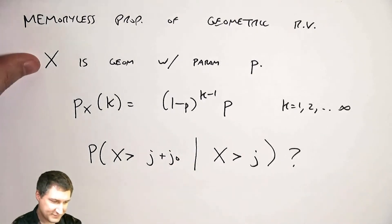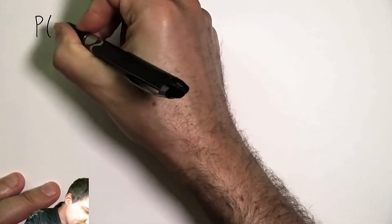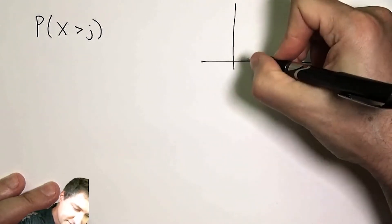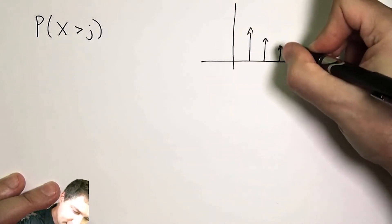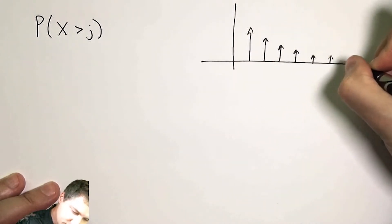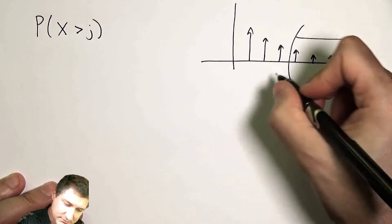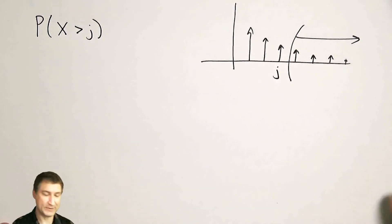Well, I can compute this from the PMF. And so let me just take a minute to derive that. So the probability that x is greater than j, well, the geometric PMF kind of looks like an infinite number of arrows with a very long tail where the arrows are decreasing. So I'm kind of asking, what is the sum of these arrows after some point j?